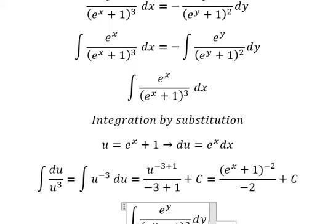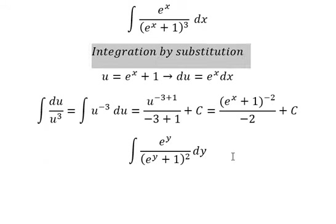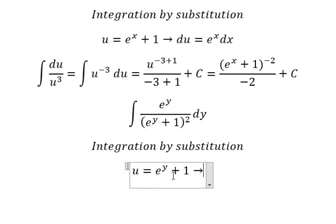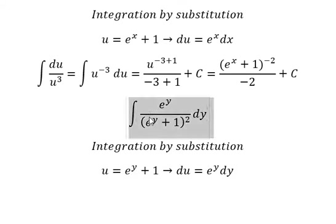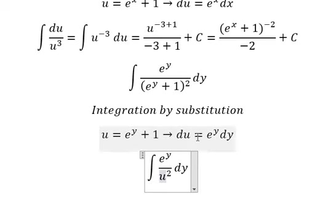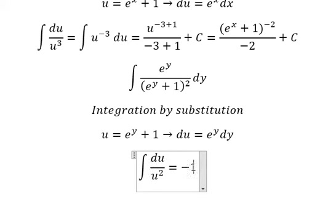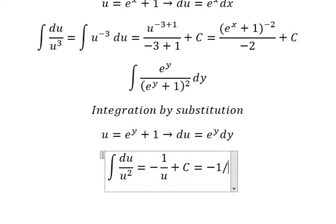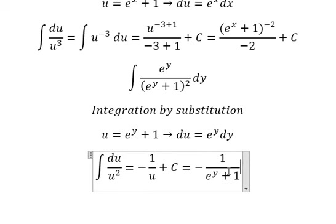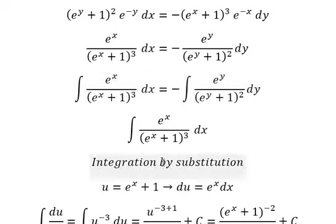Now for the second integral we use integration by substitution. I will put u equals to this one, then we do the first derivative for both sides and we have e to the power of y dy. This one we change by u, change by du. The integration by u gives us negative 1 over u, and we put about c. About u, that is about this one, and then we put about c.